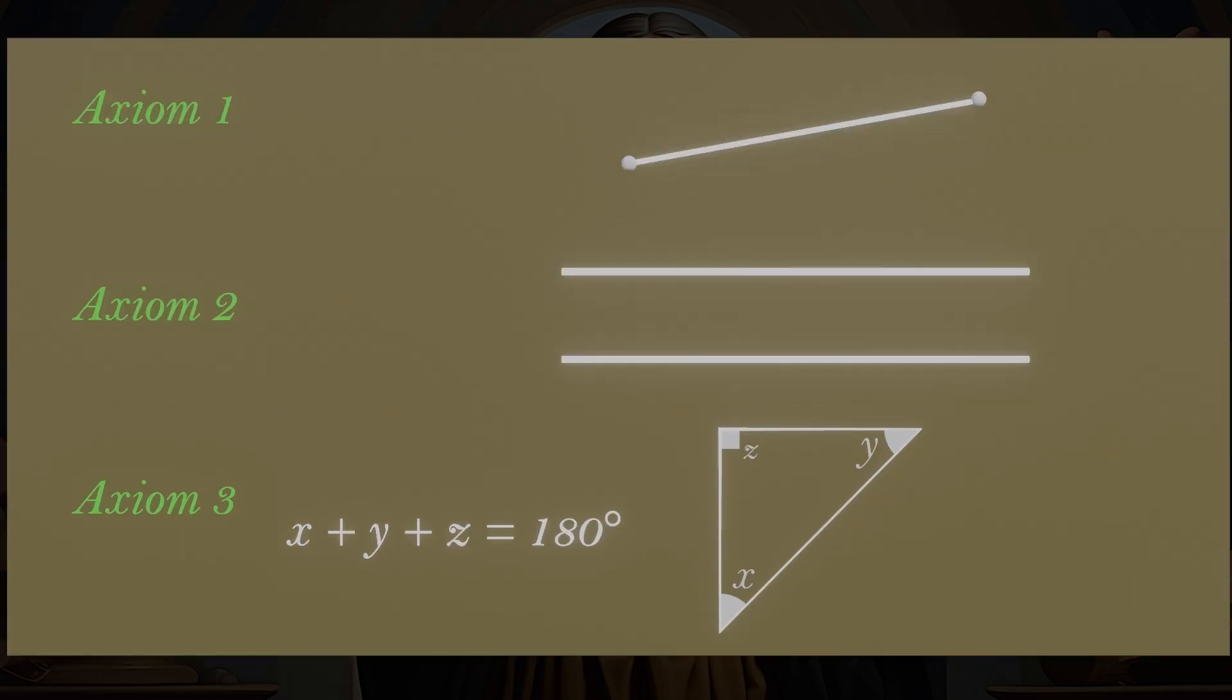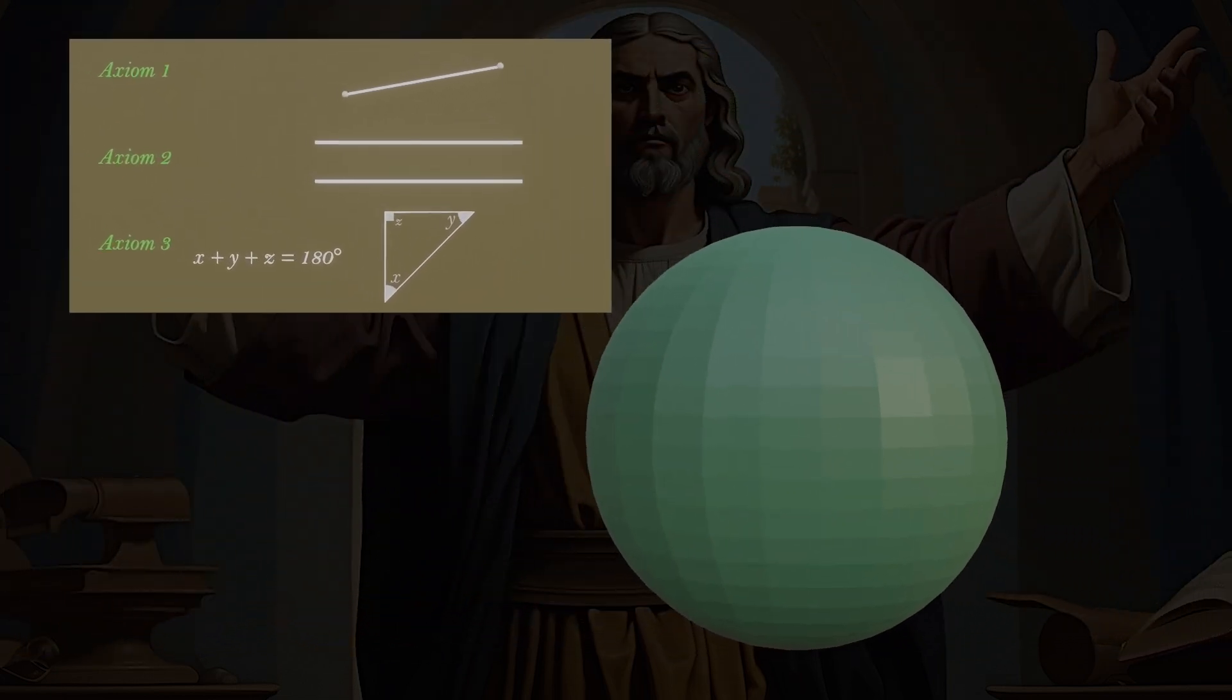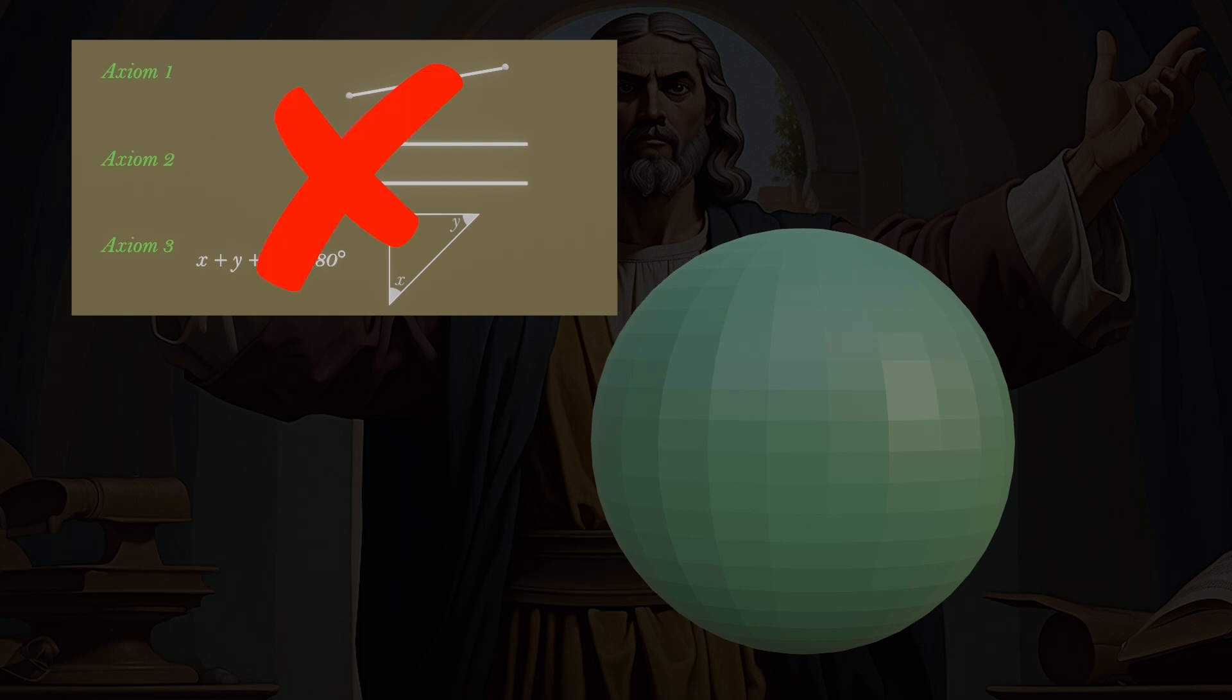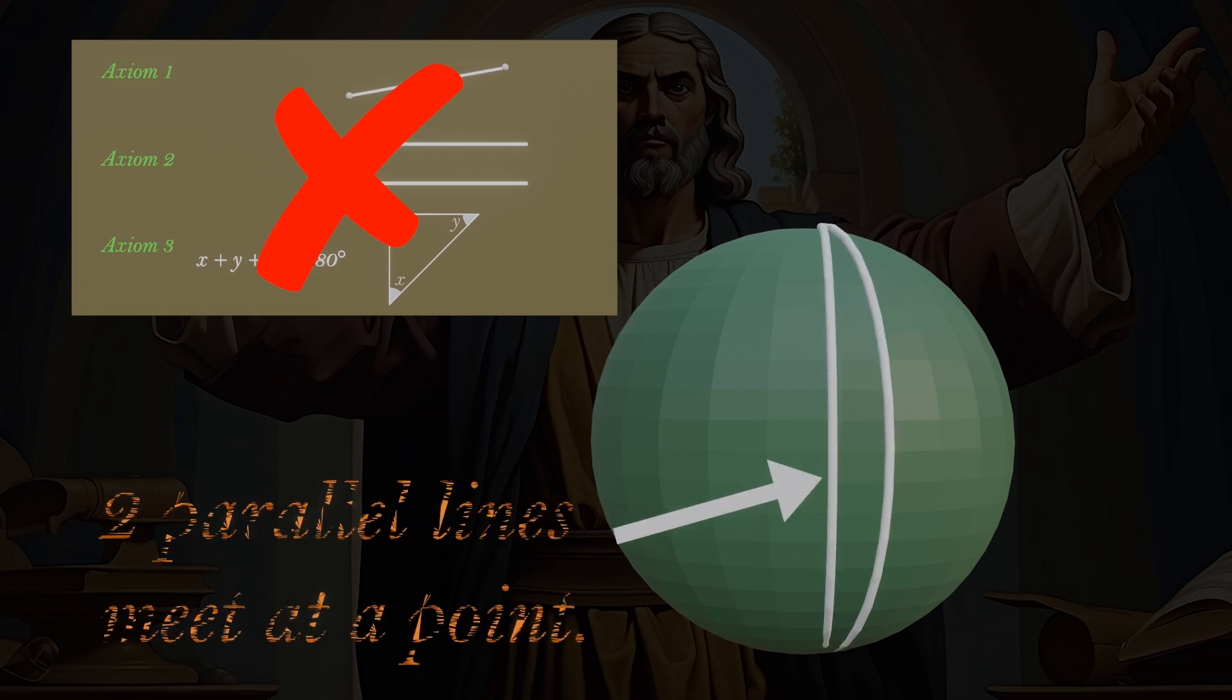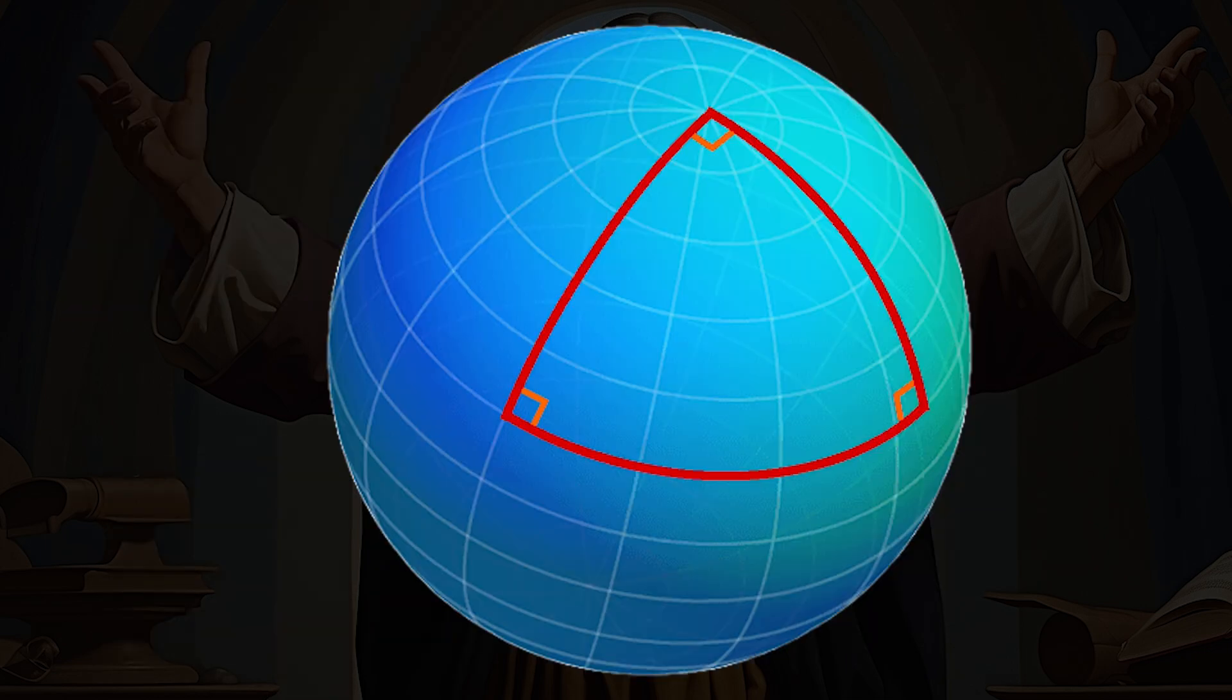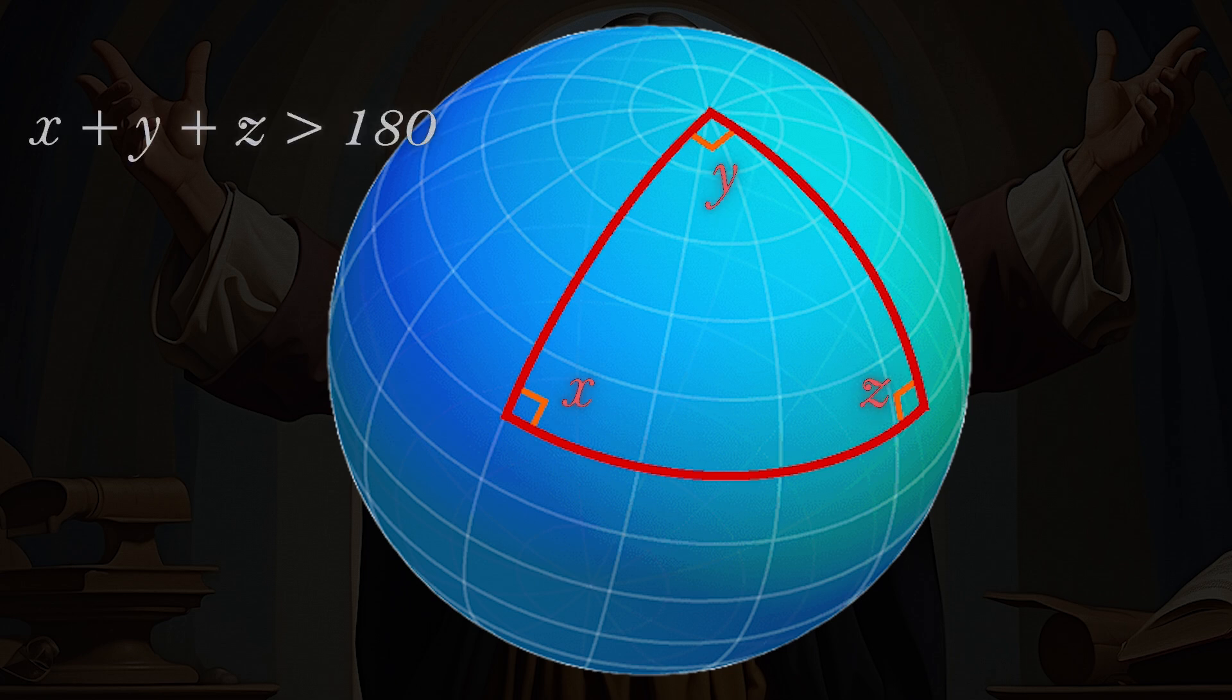But this is only true if one stays within the confines of flat surfaces. Now, if one strays into the world of curved surfaces, it is incorrect. On spherical surface, two parallel lines meet at a point, and the sum of angle of a triangle is greater than 180 degrees.